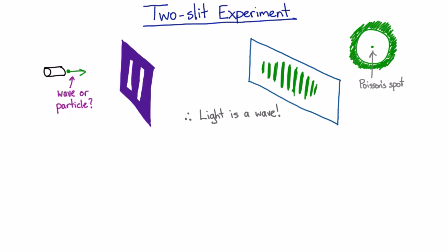And when they did, of course, what they saw was this bright spot, now called Poisson's spot. And so our final conclusion was that light is certainly a wave.